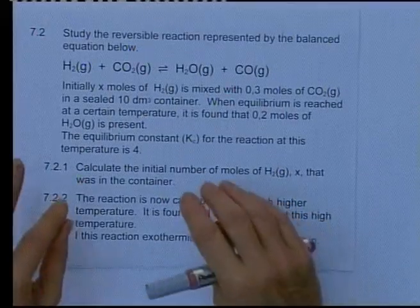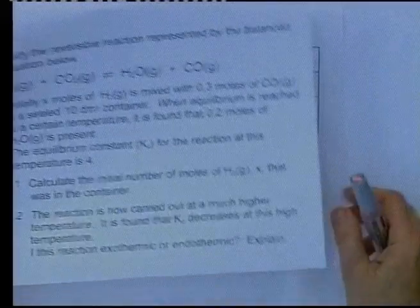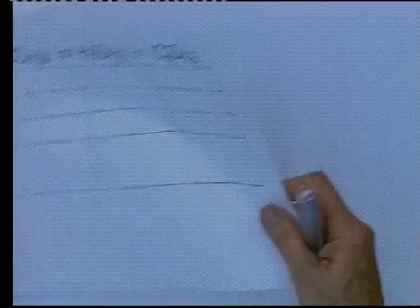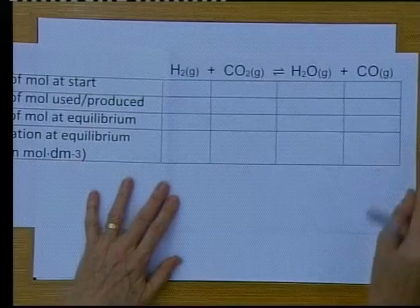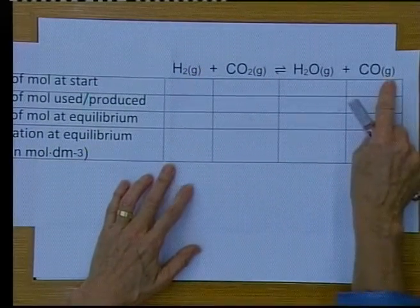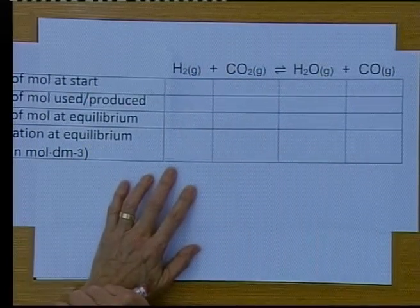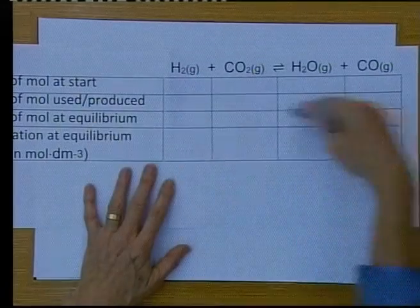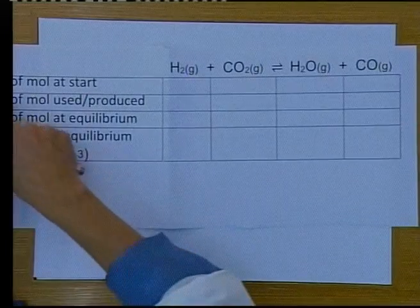Equilibrium is reached and there's 0.2 moles left of water, and they give you the equilibrium constant. You have to calculate what is x. Whenever you get a problem such as this where the equilibrium constant is involved and they don't give you anything at equilibrium, the best thing to do is to draw up a table. There's the whole table.